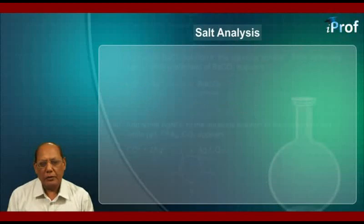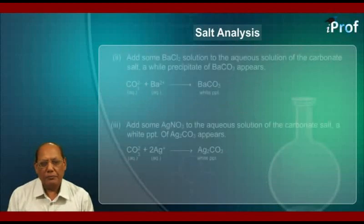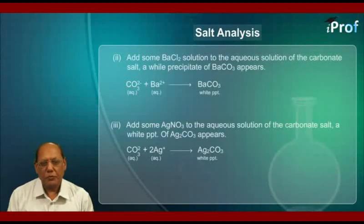The second test can be: add some barium chloride solution to the aqueous solution of the carbonate salt. A white precipitate of barium carbonate appears because carbonate ions in aqueous medium react with barium ions in the aqueous medium to form BaCO₃ that forms a white precipitate.